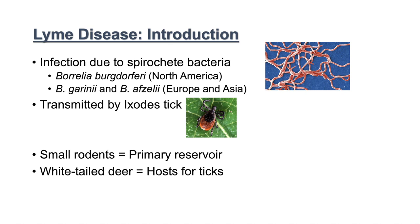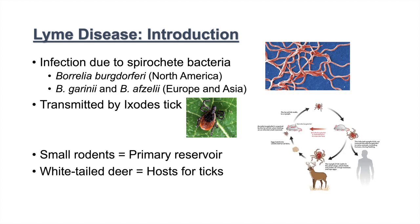Whitetail deer act as the host for ticks. The cycle of transmission is as follows: an uninfected tick will bite an infected small rodent, will carry the Borrelia bacteria, will either transmit the Borrelia bacteria to another small rodent or transmit it to a human through biting, and generally will attach itself to the host white-tailed deer, lay eggs, and this cycle will continue.